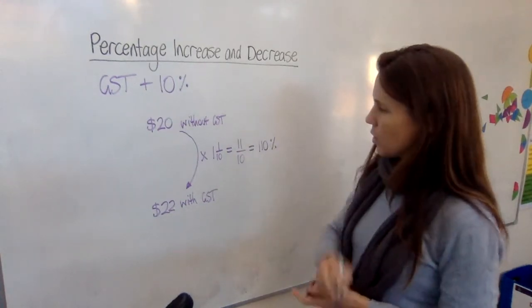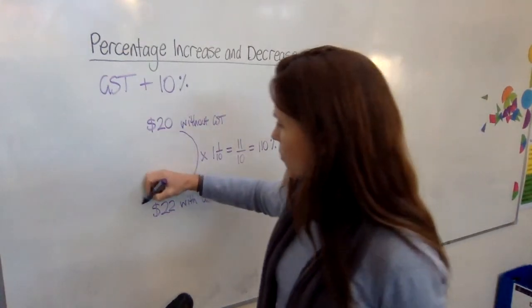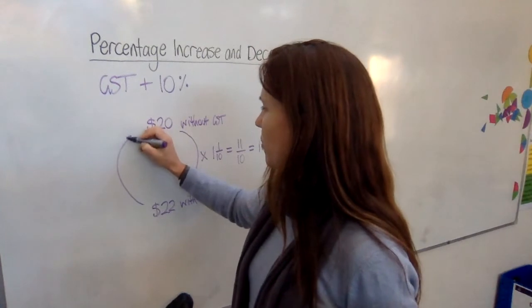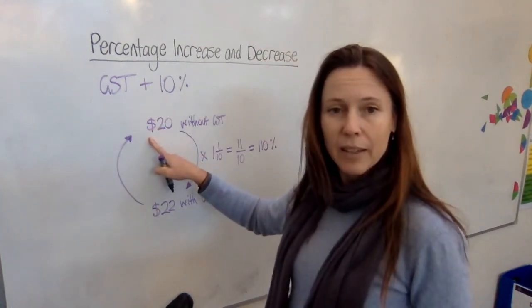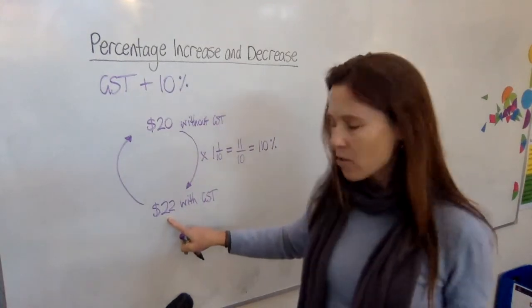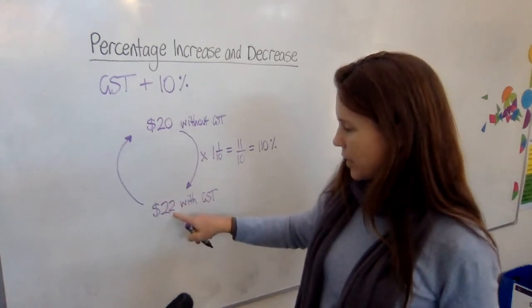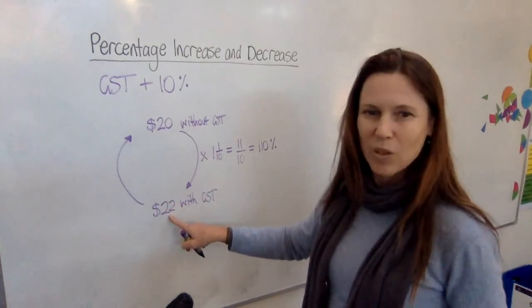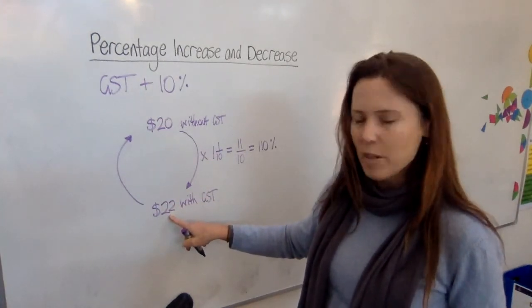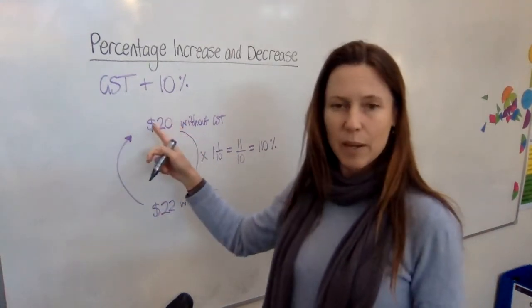Okay, but what if we knew the price with GST and we wondered how much it was without GST and we wanted to actually decrease that amount to get back? Can we just take 10% off this? And the answer is no, we can't. Because now this amount here, if we take 10% of that, we're going to get $2.20. And if we take $2.20 off, we're going to end up with less than $20. So it's not going to take us back properly.